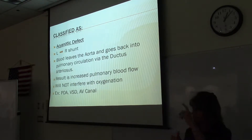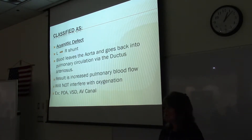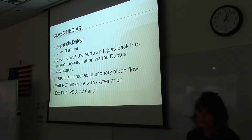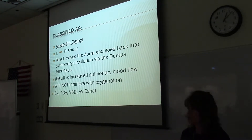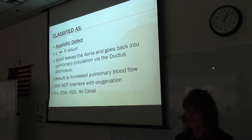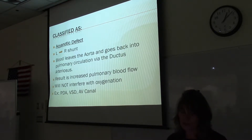When you have that vessel connecting the two, if you have high pressure in the aorta and low pressure in the pulmonary circulation, blood flows from higher pressure to lower pressure — from the aorta back into pulmonary circulation. This results in increased pulmonary blood flow, more blood going through the pulmonary vessels than normal. When you have an increase in pulmonary blood flow, you're still going to oxygenate the blood — you're going to double oxygenate it, actually. So it does not interfere with oxygenation.